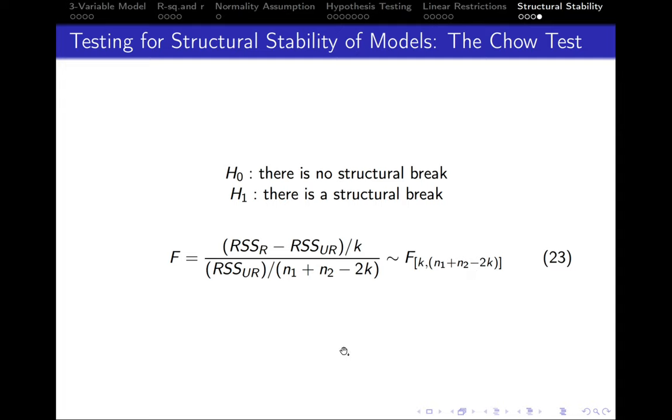After we compute this F statistic, we compare it with the critical one. If the estimated F statistic is higher than the critical one, then we reject the null hypothesis and accept the alternative one, meaning that there is a statistically significant structural break.